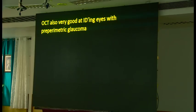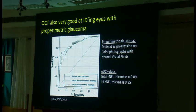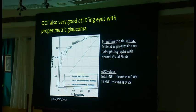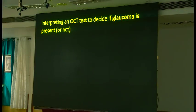Even in people who have pre-perimetric glaucoma — meaning they have a normal visual field — OCT can often identify glaucoma. A study from the UCSD group with Bob Weinreb and Felipe Medeiros took people who had progressed on color photographs but still had normal visual fields, and looked at how well OCT differentiated those individuals from people without progression. They found the area under the curve is about 0.9, doing a very good job even in people with a normal visual field who clearly have glaucoma based on photographic progression.